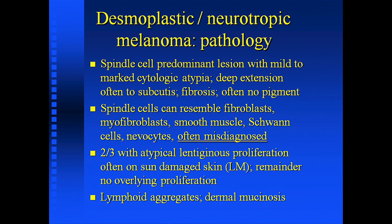There was a pathologist I knew who ordered S100 stains on everything, and I realized the reason he probably did that was because he had missed a desmoplastic melanoma — because that is the stain you use. Fortunately, in some cases, approximately two-thirds have something in the epidermis which gives the clue that this is a melanoma. The remainder have no overlying proliferation — sort of a de novo dermal type, where perhaps the melanocytes were deeper in the dermis.